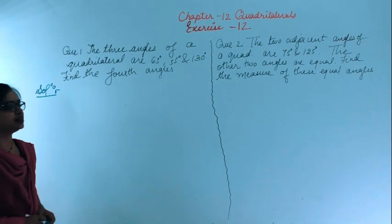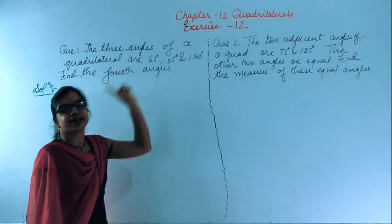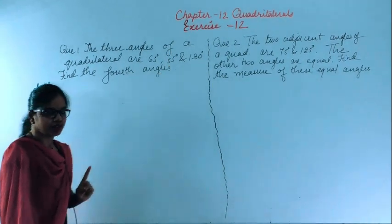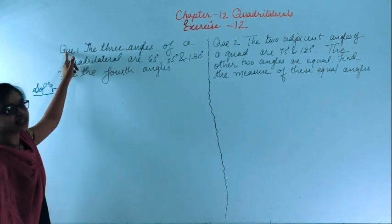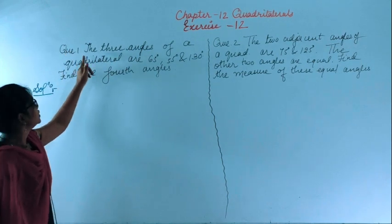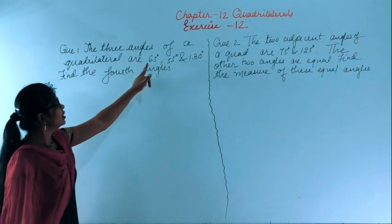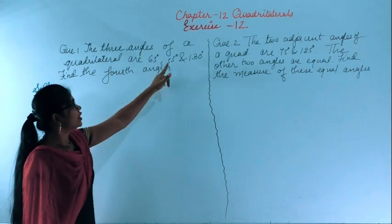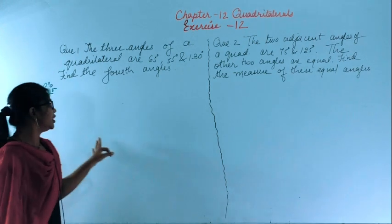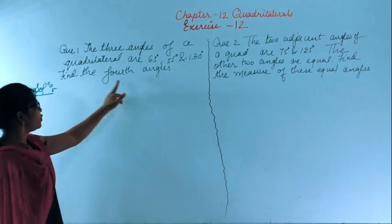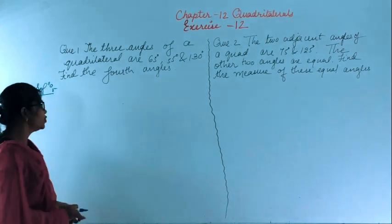This is chapter 12, quadrilaterals, exercise 12, first question. It says that three angles of a quadrilateral are 65 degrees, 55 degrees, and 130 degrees. You have to find out the fourth angle.